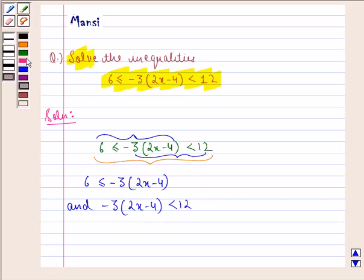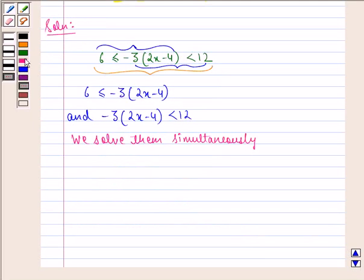Now we solve them simultaneously. We have 6 is less than equal to minus 3 into 2x minus 4 which is strictly less than 12.